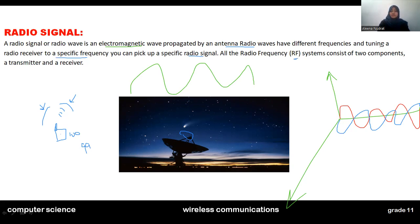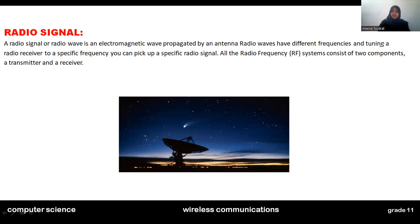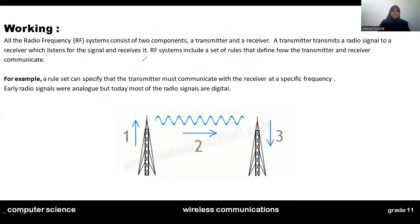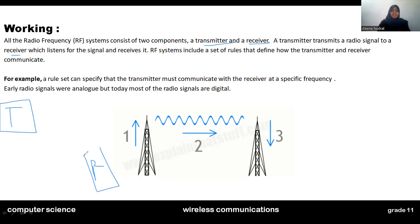The radio transceiver consists of two components: a transmitter and a receiver. The transmitter transmits the signal, and the receiver receives it. Our transmitter transmits the radio signal to our receiver. The transmitter is on one side and the receiver is on the other side, and the transmitter will transmit radio signals which the receiver will receive.